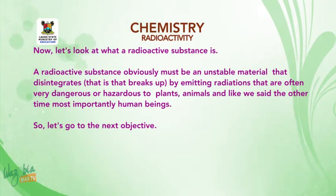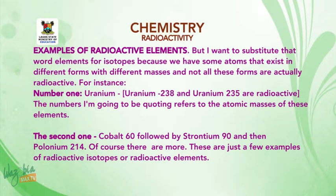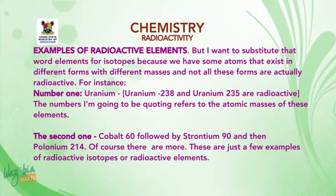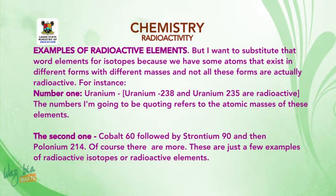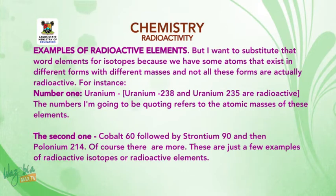Let's look at examples of radioactive elements — I want to substitute that word 'elements' for 'isotopes' because some atoms exist in different forms with different masses, and not all these forms are radioactive. For instance: uranium-238 and uranium-235 are radioactive. The numbers refer to the atomic masses of these elements. Also cobalt-60, strontium-90, and polonium-214. These are just a few examples of radioactive isotopes.